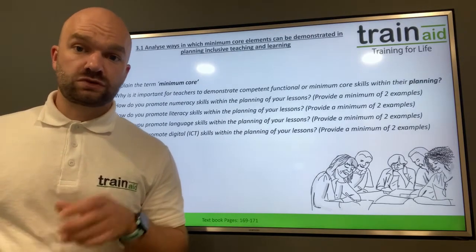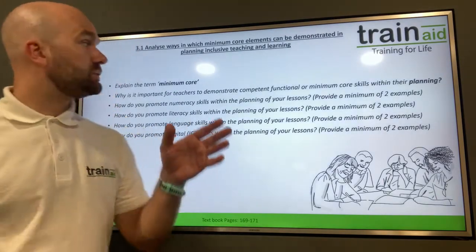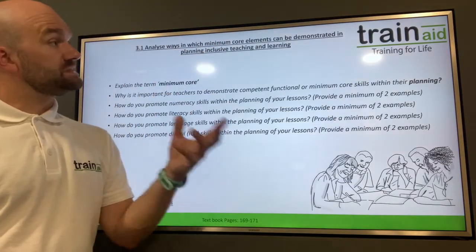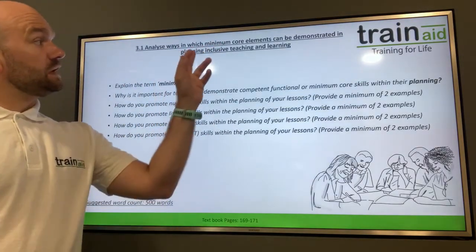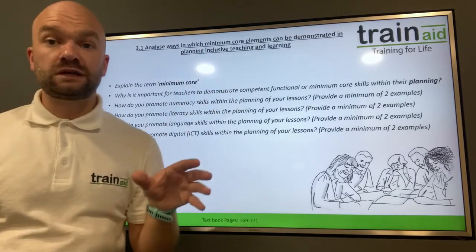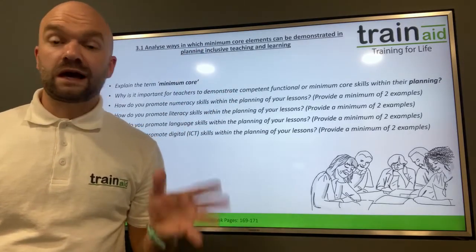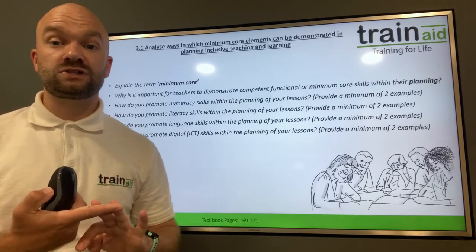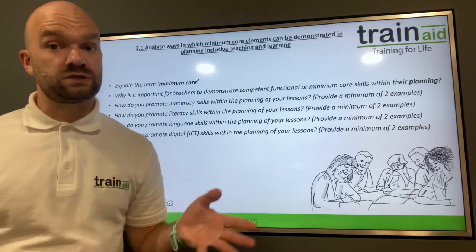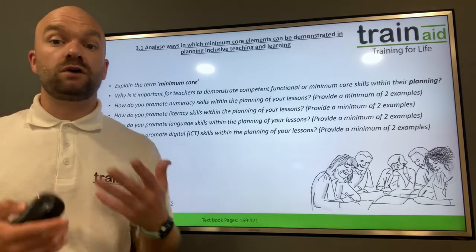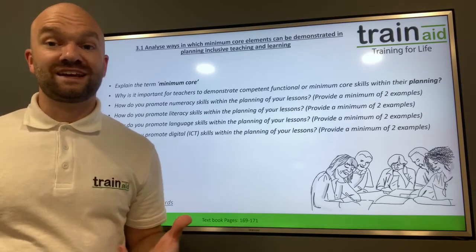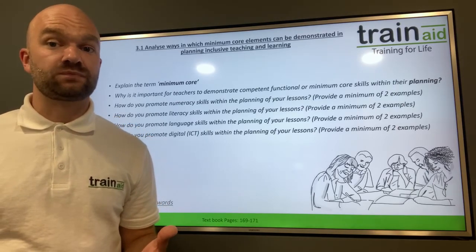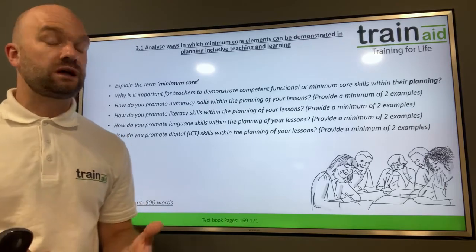We're moving on to criteria 3.1: analyse ways in which minimum core elements can be demonstrated in planning inclusive teaching and learning. The minimum core, as we know, is numeracy, literacy, language, and also digital skills — otherwise known as ICT skills. It's very important that we show competence in these skills within our planning and delivery as a teacher and trainer, and promote these with our learners.